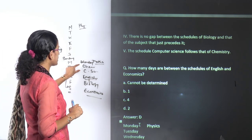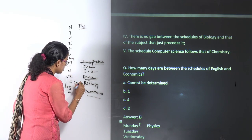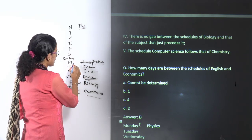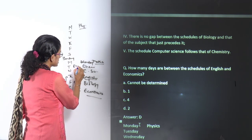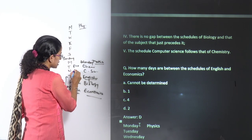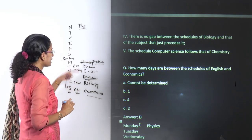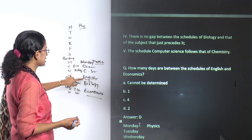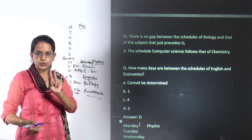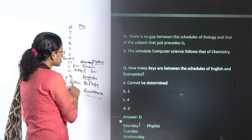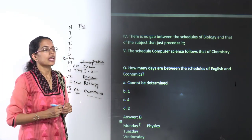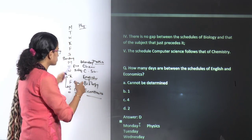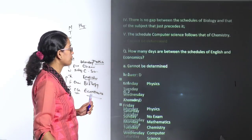The other way of solving it: chemistry and computer science can come here, and economics and biology can go there. Again, under that combination you would have economics and English with a two-day gap. So there are two possible combinations, and under both, the schedule between English and economics shows a two-day gap.